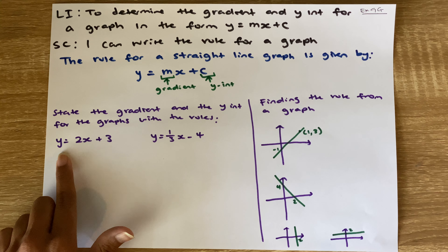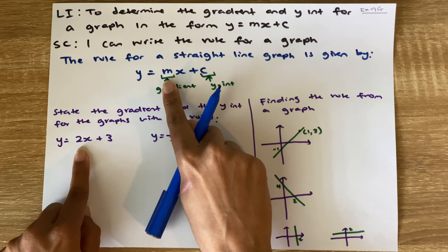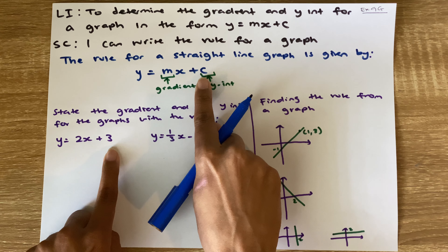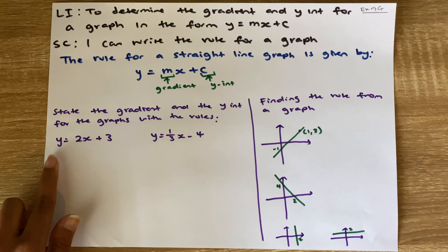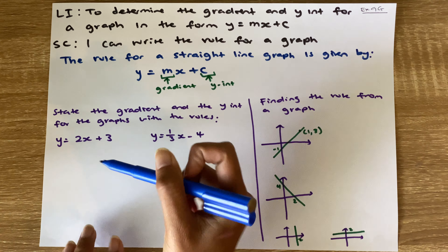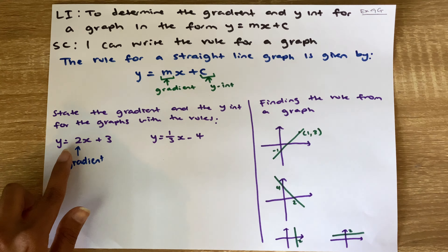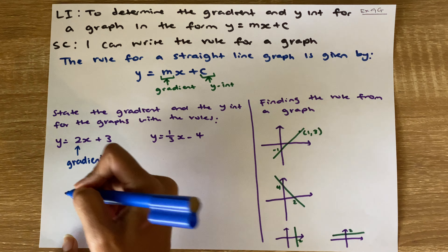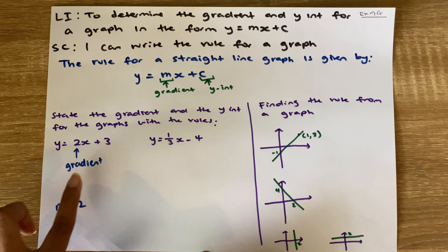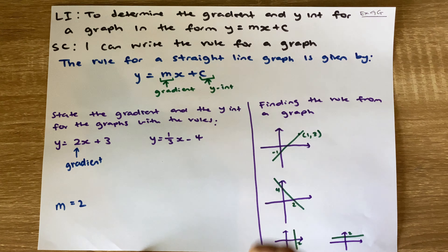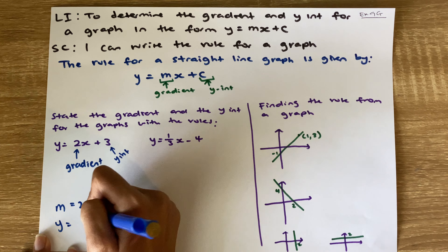We have this rule here: y equals 2x plus 3. We have a y on the left-hand side equals a value multiplied by x, plus or minus another value. We can see this format is exactly the same. The number written before x is going to be my gradient, or my slope. Because it's a positive number, we know the slope is going upward. So my gradient, or m value, is 2. And the 3 on the end — the constant — is going to be my y-intercept, which is therefore 3.